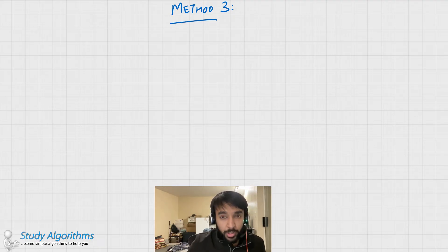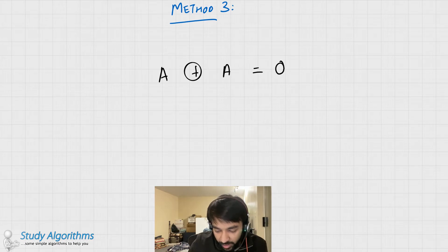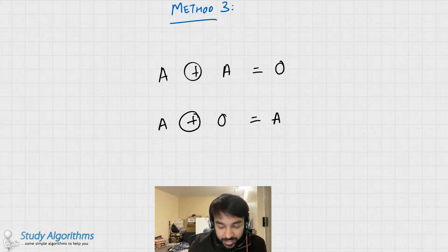Some of the properties of bitwise operators that we would be using are basically a XOR a equals to 0, and a XOR 0 equals to a. These are the two basic properties of a XOR operator.